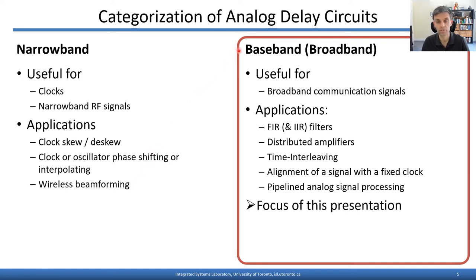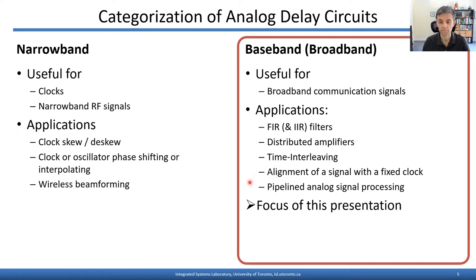We're focused here on baseband broadband analog delay circuits. These are useful for delaying broadband communication signals while precisely preserving their wave shape. Applications include FIR and IIR filters using broadband delays, distributed amplifiers, time interleaving, alignment of a signal with a fixed clock, and pipeline analog signal processing without sampling. This is the focus of this presentation.